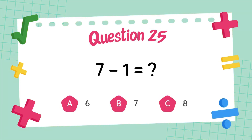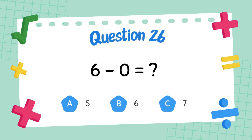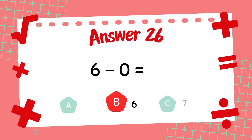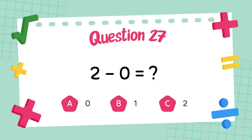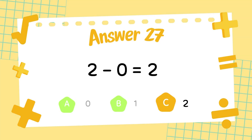What is 7 minus 1? The answer is 6. What is 6 minus 0? The answer is 6. What is 2 minus 0? The answer is 2.